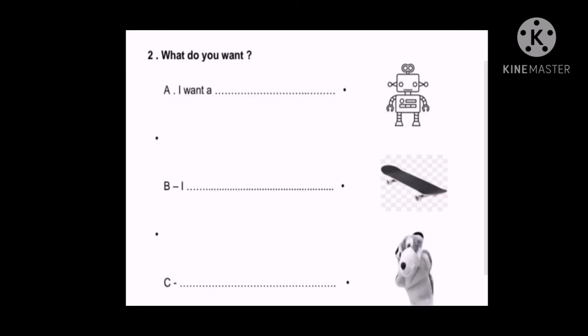Now exercise number two. Here we have a question. The question is: What do you want? Repeat the question please after me. What do you want? Here we should answer the question. In the first one we will complete the sentence. And in B, but in C we will write the sentence, we'll write the full sentence.